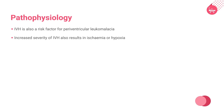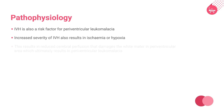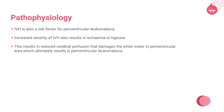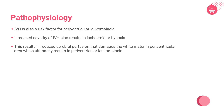Increased severity of IVH also results in ischemia or hypoxia. This results in reduced cerebral perfusion that damages the white matter in the paraventricular area, which ultimately results in paraventricular leukomalacia.